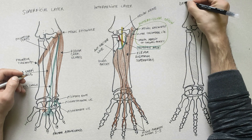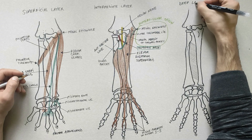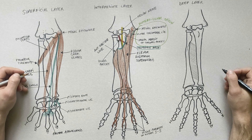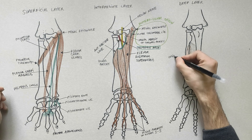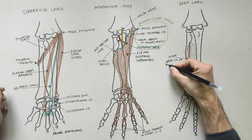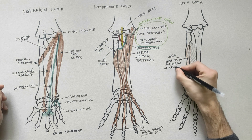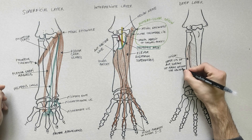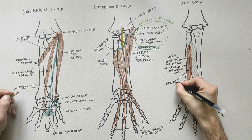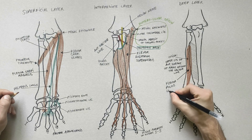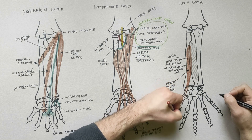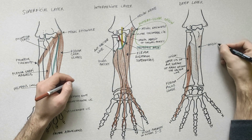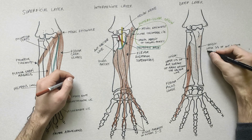On the last diagram, we will draw the deep layer of the anterior compartment of the forearm. This layer contains three muscles. The flexor pollicis longus originates from the upper two-thirds of the anterior surface of the radius below the oblique line, and from the adjacent medial half of the interosseous membrane. Its tendon inserts into the base of the distal phalanx of the thumb.